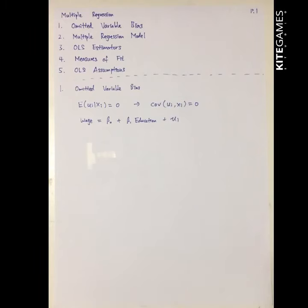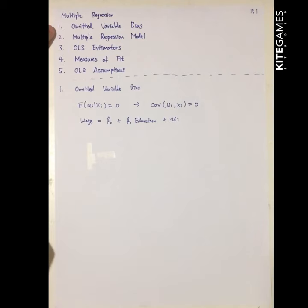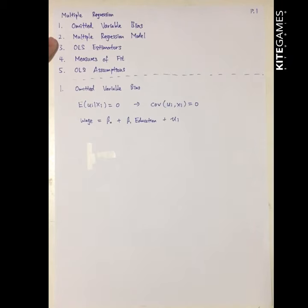We have finished discussing the simple linear regression model. Next, we are going to the multiple regression. We will first take a look at the omitted variable bias, which is the main reason why we cannot rely so much on simple linear regression. After this, we will introduce the multiple regression model, which is used to solve the omitted variable bias.